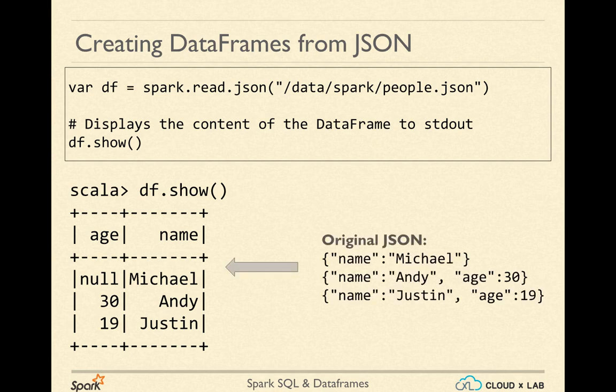You can see that Spark has inferred the structure of the data from JSON. It has figured out the column names from the JSON objects and also fit the values into respective columns. The first JSON object did not have an age attribute, but Spark was still able to figure out the column name because age exists in the other JSON objects. So you can see that this is a pretty sophisticated way of processing big structured data available in JSON format.